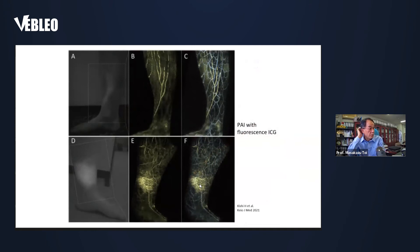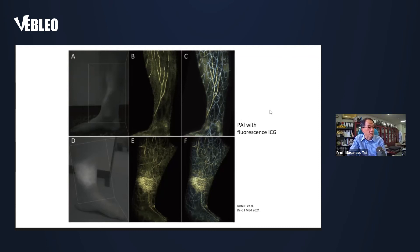Another beautiful view was from the Keio University group — plastic surgery — Professor Kishi and Dr. Kajita and colleagues. Looking at the lymphatic system and lymphatic ducts using fluorescence ICG, indocyanine green. It's a good matching of fluorescence ICG and photoacoustic imaging. Now we can identify very fine lymphatic vessels and lymphatic routes. These views would be useful for diagnosis of lymphatic disease, and also for microsurgery and anastomosis of lymphatic ducts and veins.